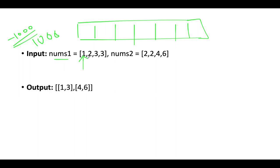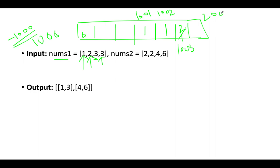The first element is 1. Adding 1000 gives index 1001, so I update the frequency at index 1001 to one. Next is 2 — index 1002 gets frequency one. Then 3 — index 1003 gets frequency one. Then another 3 — index 1003 gets updated to two. So in the frequency map, only indices 1001, 1002, and 1003 have frequency greater than or equal to one.